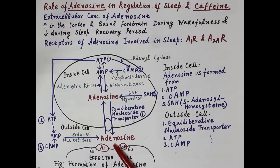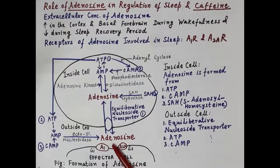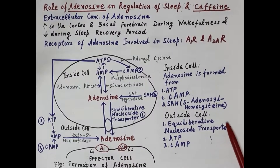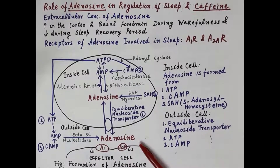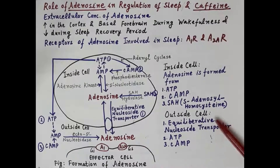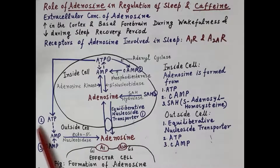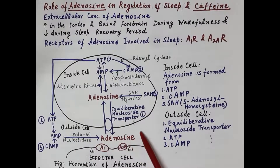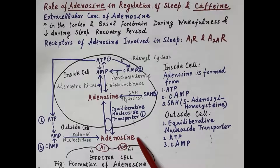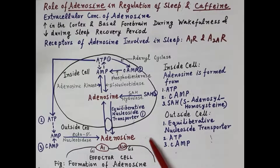During wakefulness, there is an increase in adenosine inside the cell and consequently outside the cell. Outside the cell, there are again three sources for adenosine formation: the equilibrative nucleoside transporter, ATP, and cyclic AMP. This concentration of adenosine rises as the duration of wakefulness increases.